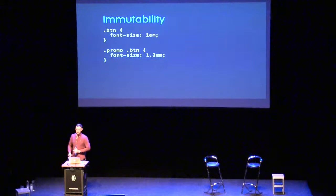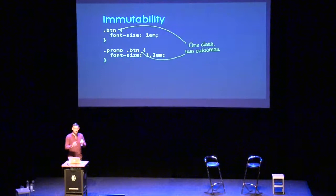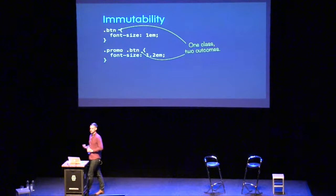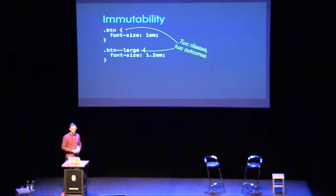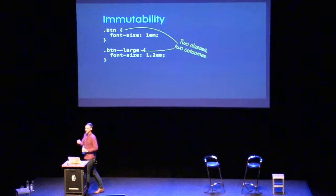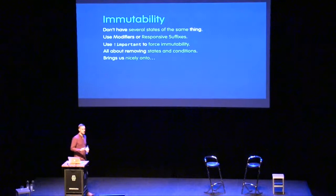To avoid mutations in utility classes, enforce immutability with `!important`. Another example: we've got a button with a certain font size, and when it moves into the promo area we want the font size to increase — but that's one class with two outcomes. To fix this, use a second class — using BEM — to add that change in behavior. Now we've got two inputs, two outputs, zero mutations. Everything's defined in its own responsibility. This is an immutable way of building UI.